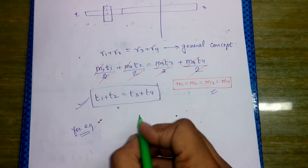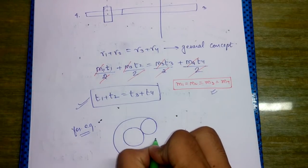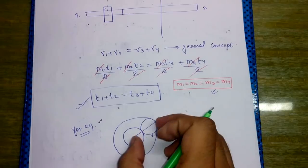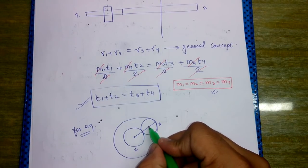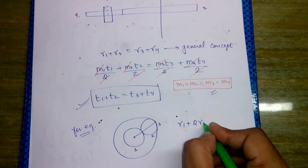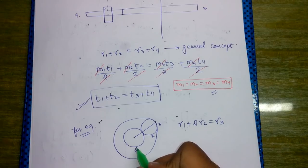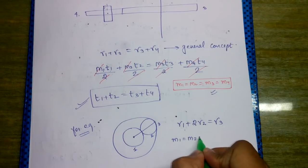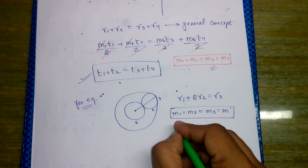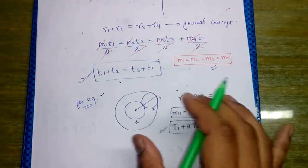For example, consider gear 1, gear 2, and gear 3 arranged such that the distance from the center equals radius of gear 1 plus diameter of gear 2, and from here it equals the radius of gear 3. So radius of 1 plus 2 times radius of 2 equals radius of 3. Since gears 1, 2, and 3 are all mating, m1 equals m2 equals m3 equals m, and hence t1 plus 2*t2 equals t3.